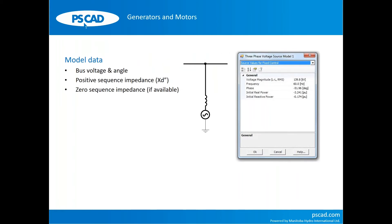Generators and motors within the two-bus boundary are typically represented by voltage sources. Their mechanical dynamics take seconds — time constants are in seconds — and don't influence switching overvoltages, which happen very fast. You don't need to model generators with exciters, governors, or inertias. You can represent generators with a simple voltage source, and the source impedance is typically selected based on the sub-transient reactance of the generator.